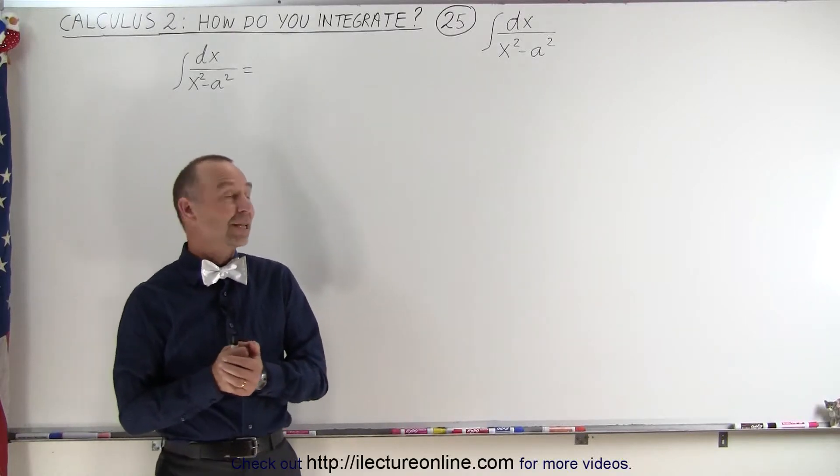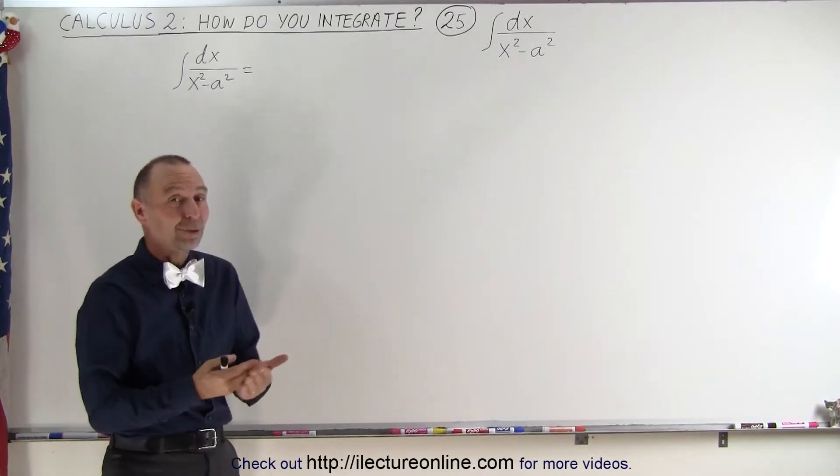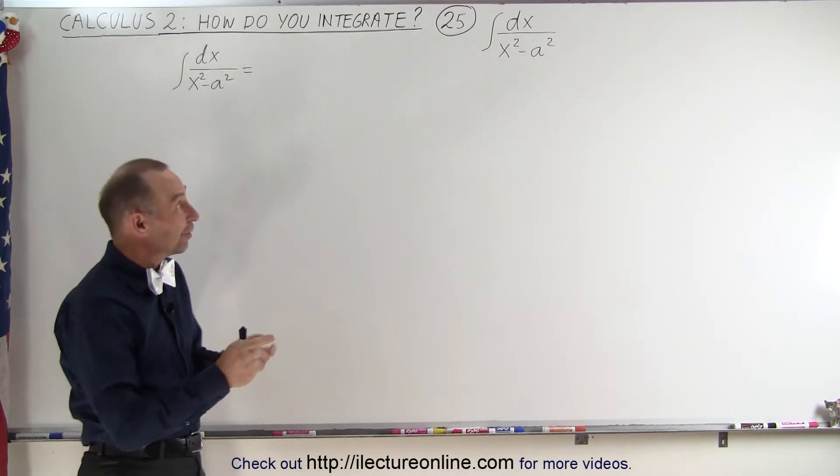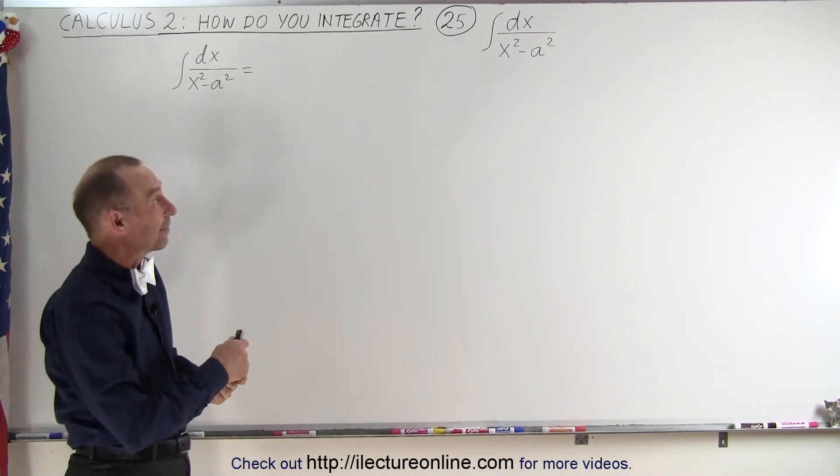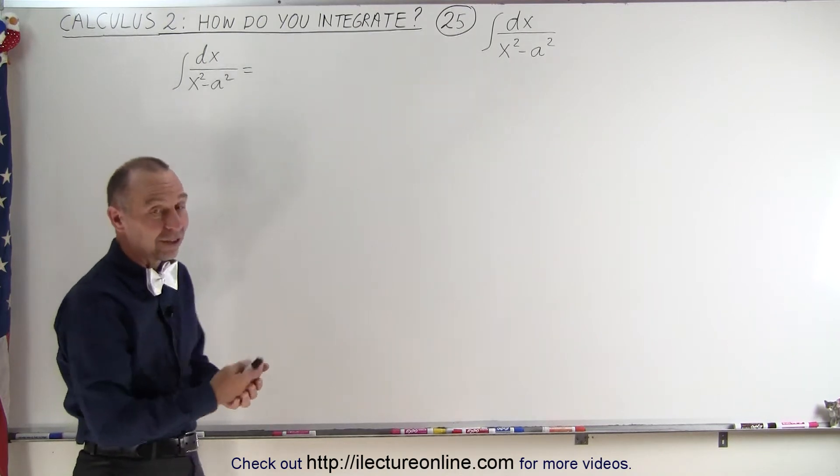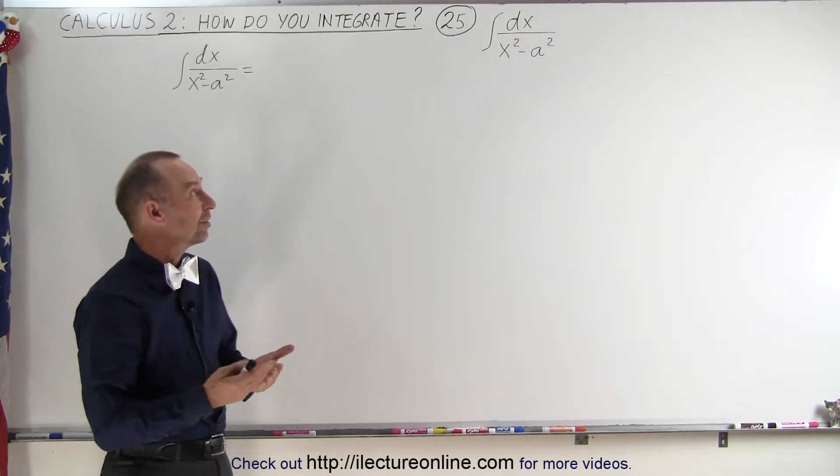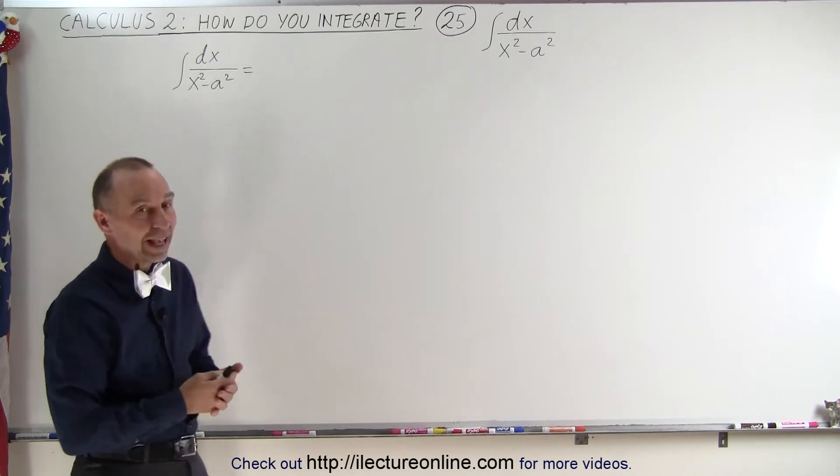Welcome to our lecture online. Now here we have something that looks very similar to what we've seen before. The difference is that the x and the a have been interchanged. So instead of having dx divided by a squared minus x squared, we now have dx divided by x squared minus a squared.